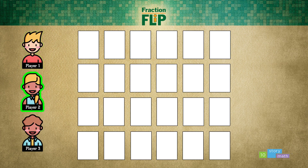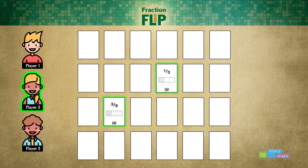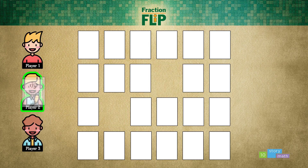Player two flips a card: three-ninths. Player two thinks to themselves, have I seen an equivalent fraction to three-ninths? Yes — one-third is a nickname for three-ninths. But where was it? Player two tries to remember where that card was. They flip over that spot, and yes, it's a match. Player two keeps those cards and gets to go again.